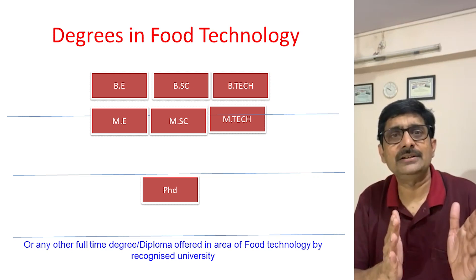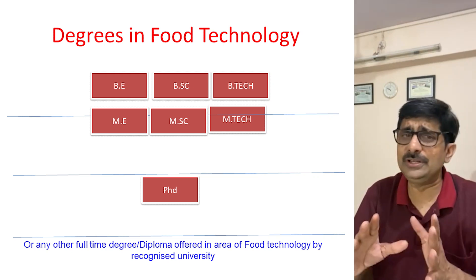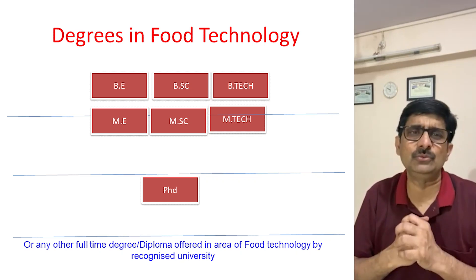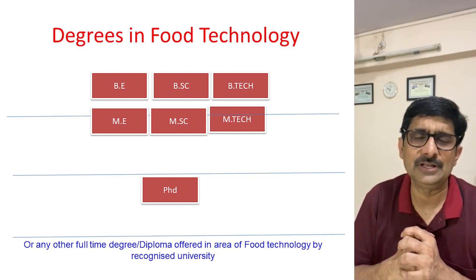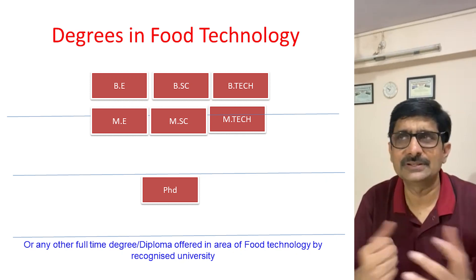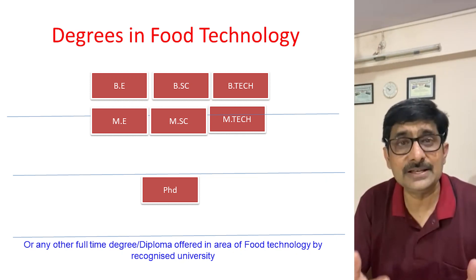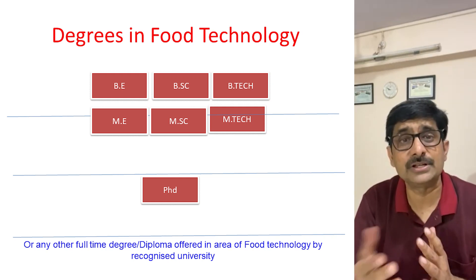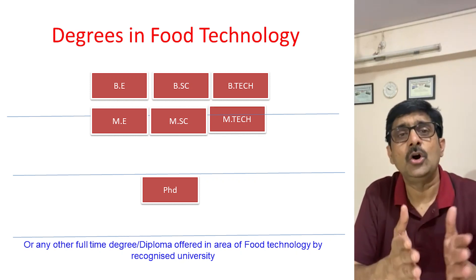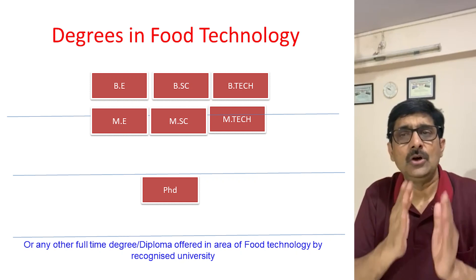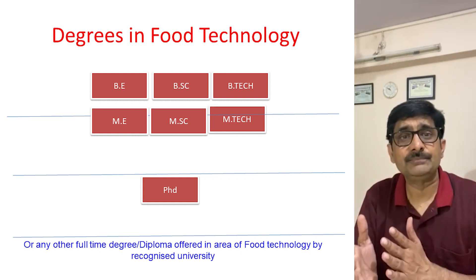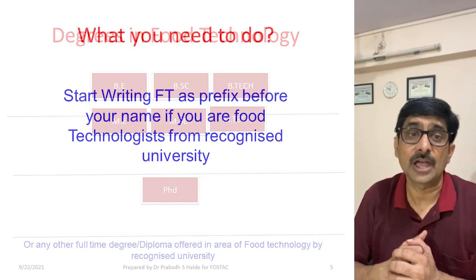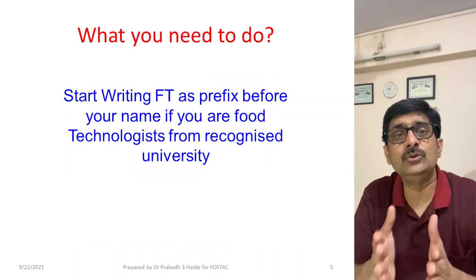To understand whether a person is a food technologist, today there is no registration system for food technologists. I am giving a simple method to identify food technologists. Just like advocates use ADV, Chartered Accountants use CA, Chartered Secretaries use CS, registered dietitians use RD, and doctors use DR — can we start writing FT before our name as a prefix?